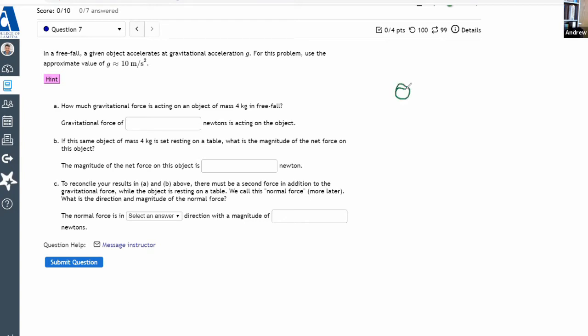So I have an object, a given object, which I'm told is in freefall, an object that's 4 kilograms. And if it's in freefall, what that means is that it's accelerating at g. So this thing should be accelerating downward with the acceleration of g or 10 meters per second squared.